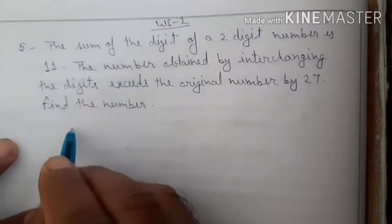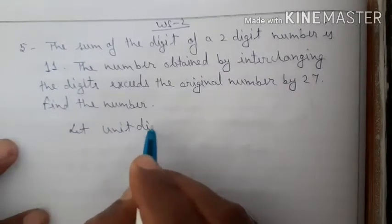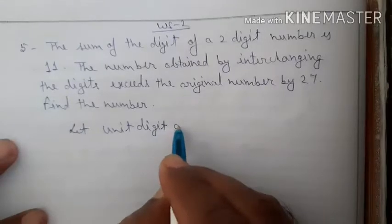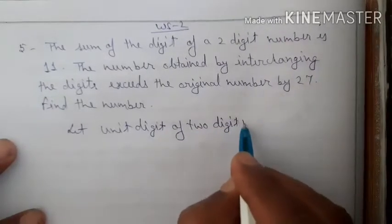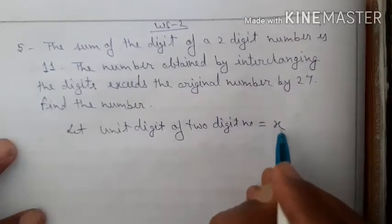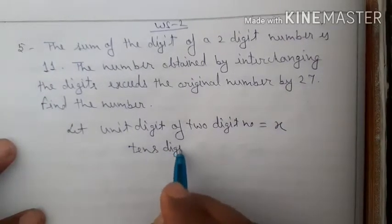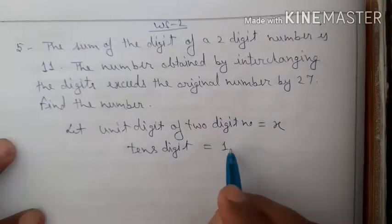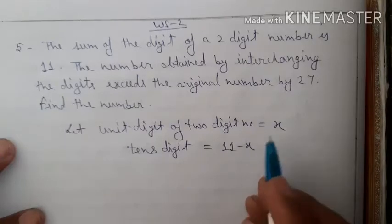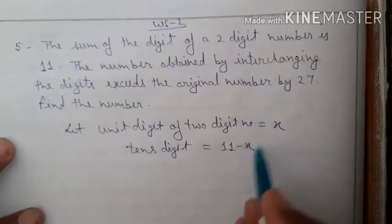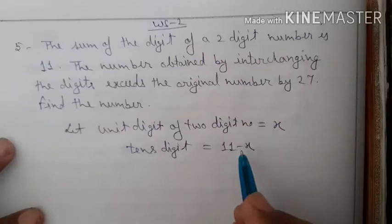Here, let the tens digit of the two-digit number be x. Since the sum of both digits is 11, the units digit will be 11 minus x. Note that x minus 11 won't work because both digits must sum to 11, so 11 minus x plus x equals 11.